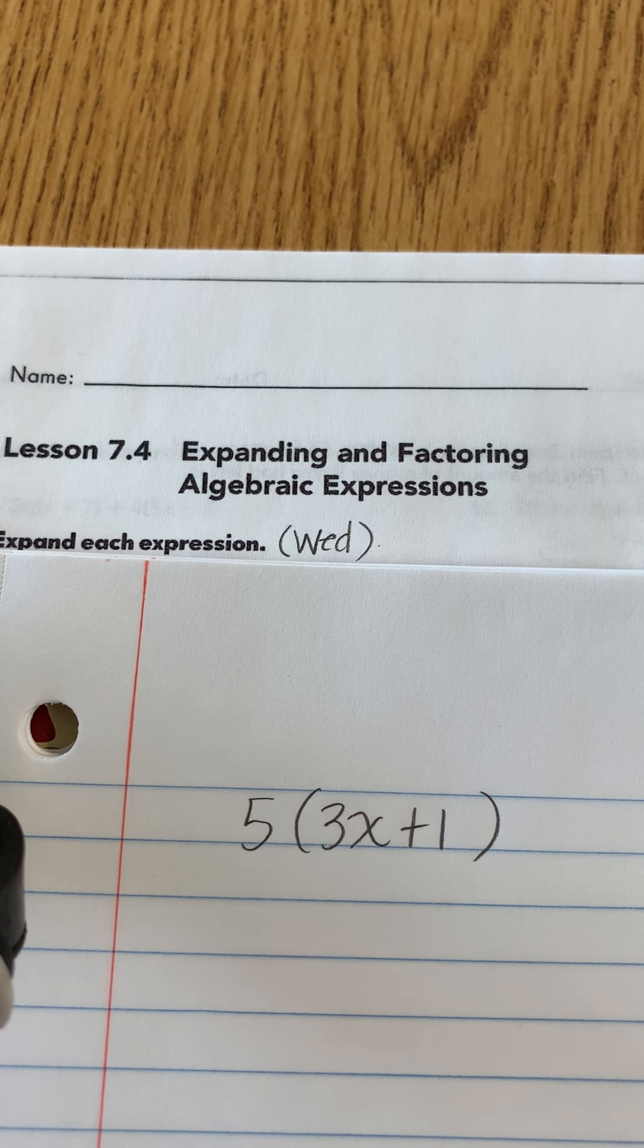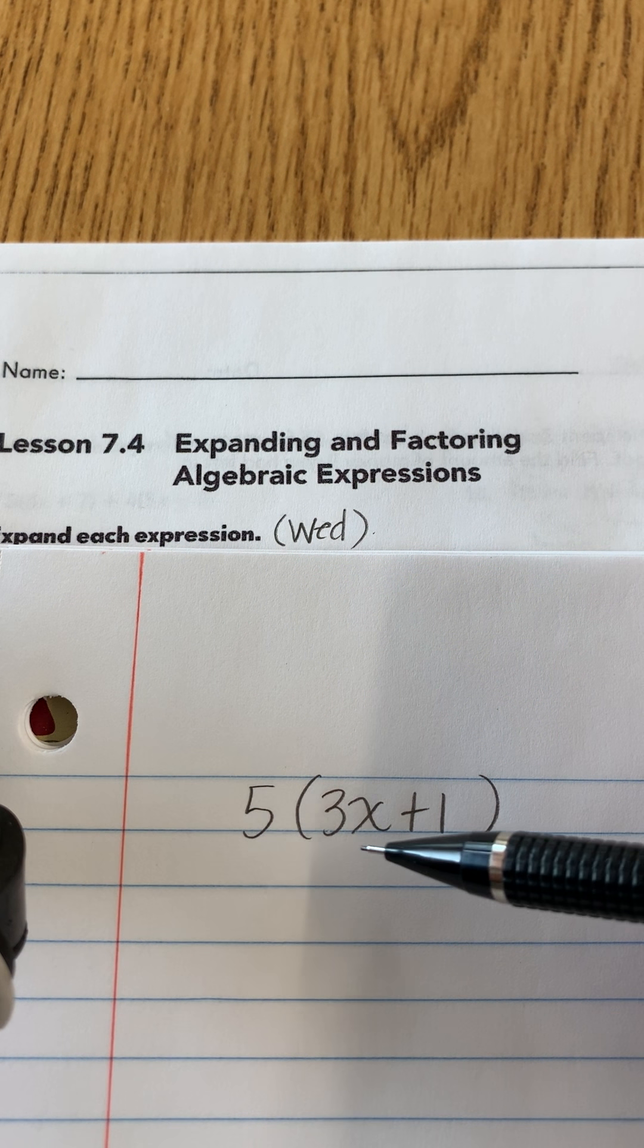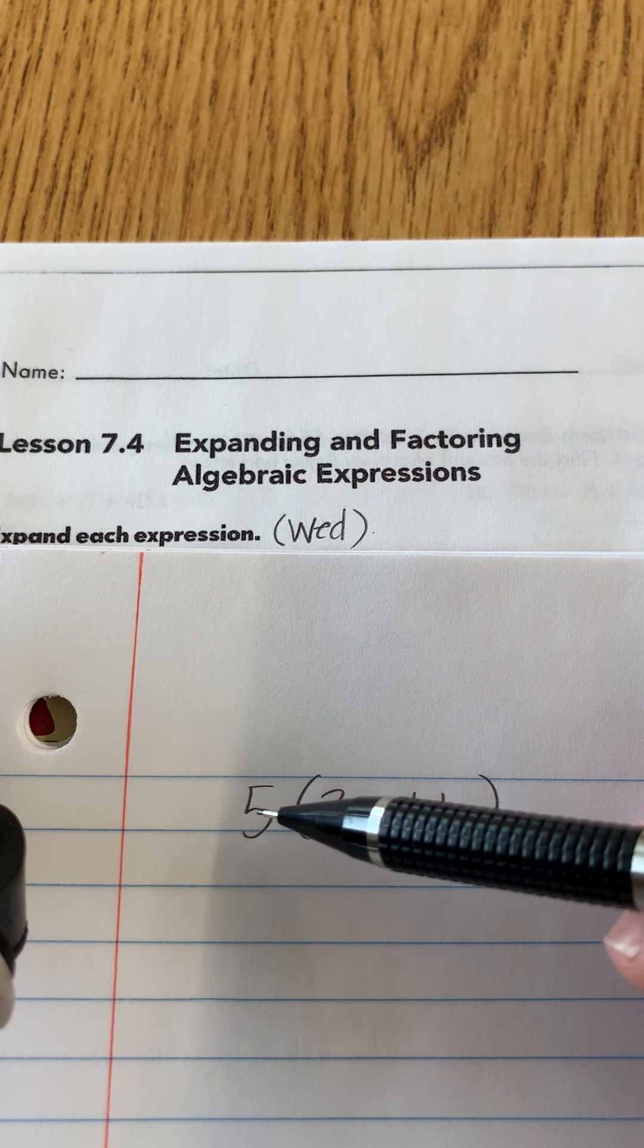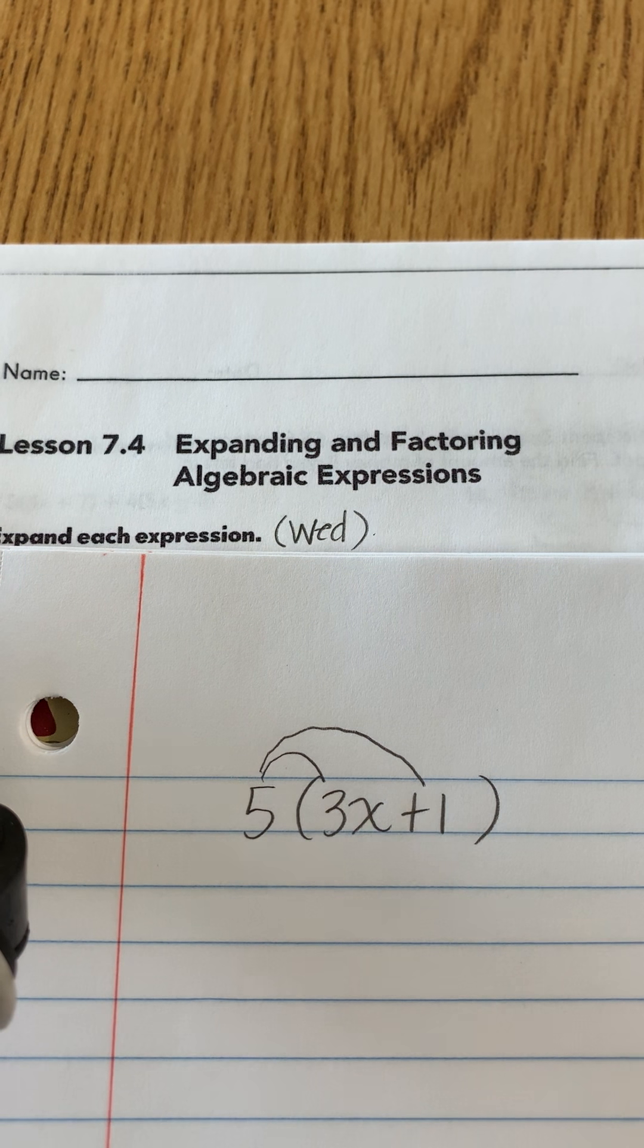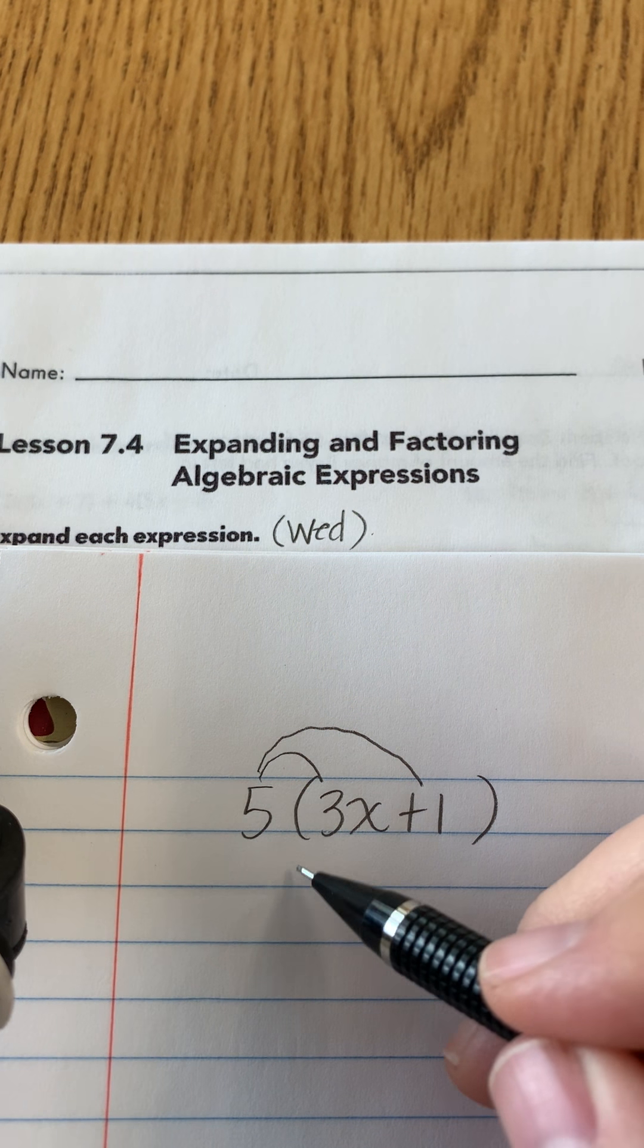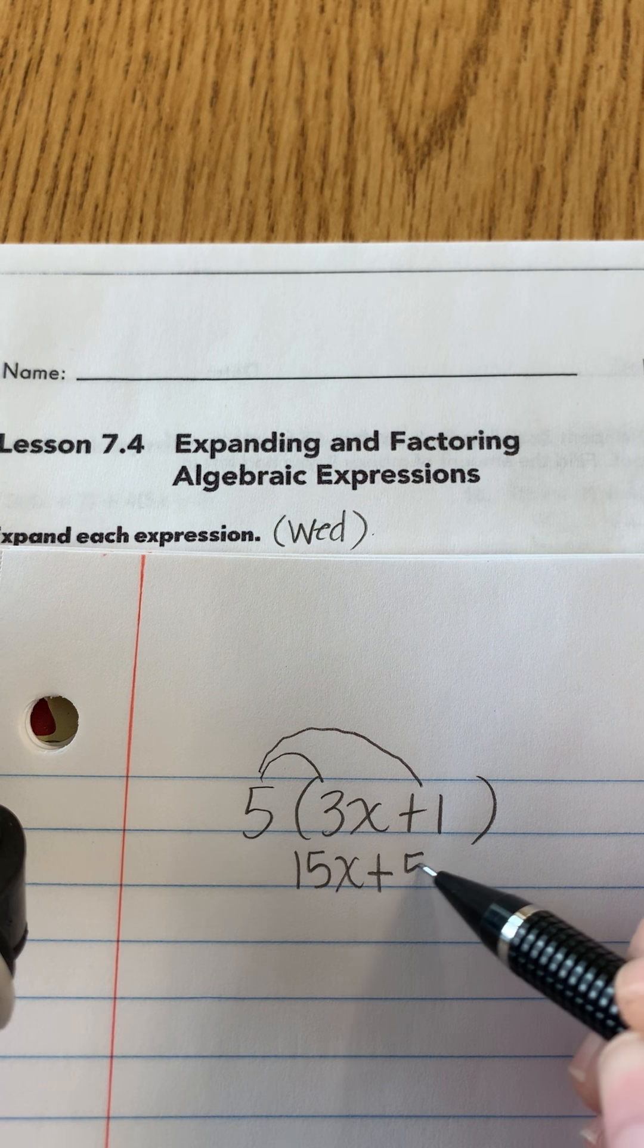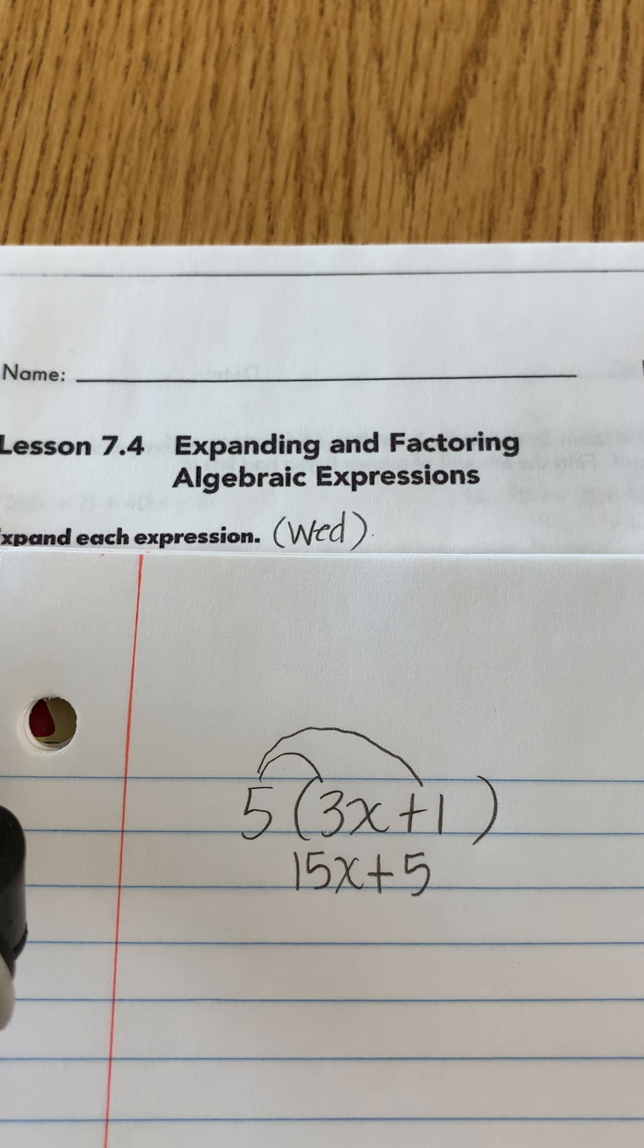Now as a reminder, yesterday we were expanding. So if you have something like this, 5(3x+1), where 3x plus 1 is in simplest form, when I multiply this by 5, I have to distribute the 5. That means I multiply both parts by the 5. So 5 times 3x is 15x plus 5 times 1 is 5. So if I were to expand this, I would get 15x plus 5.